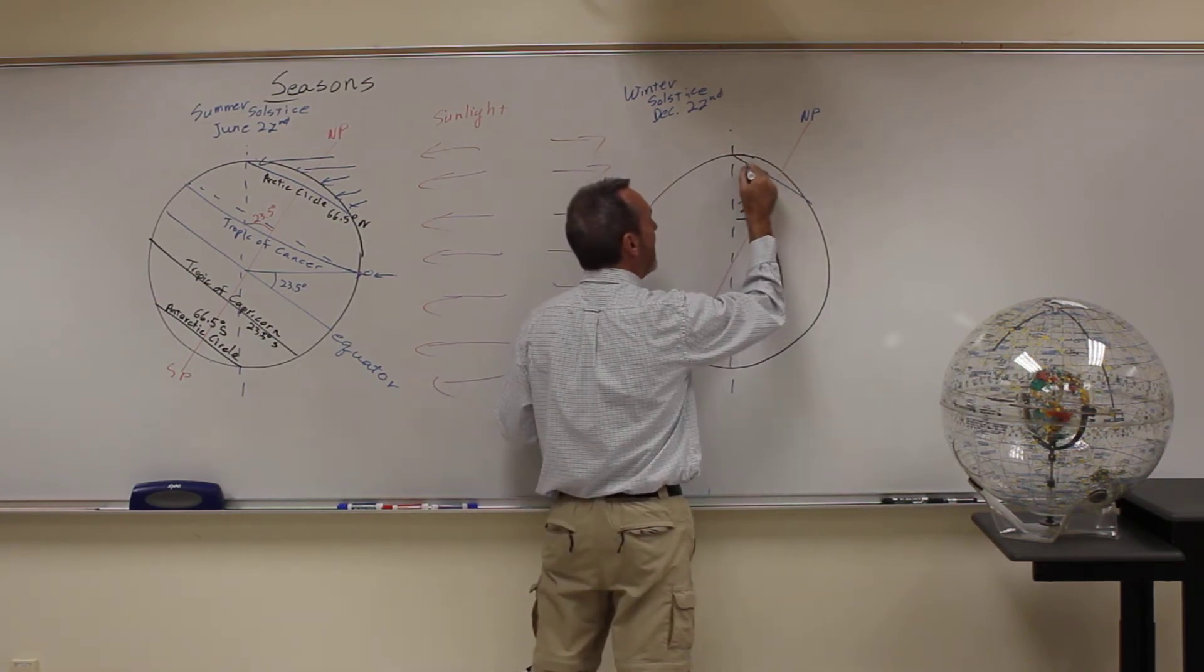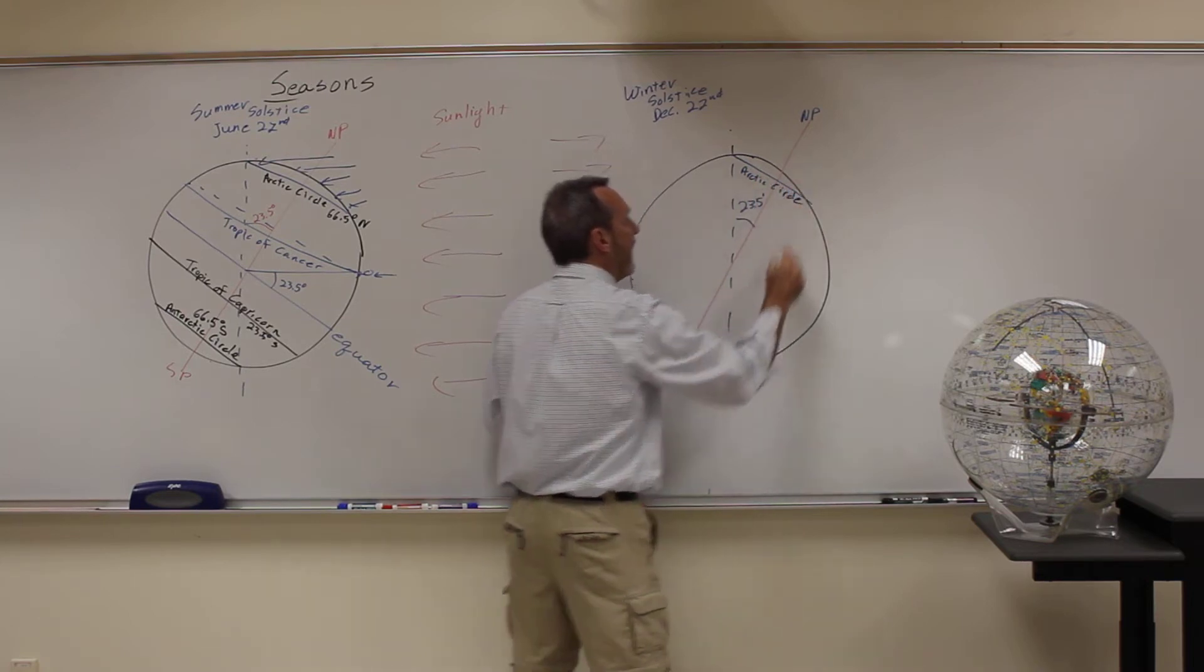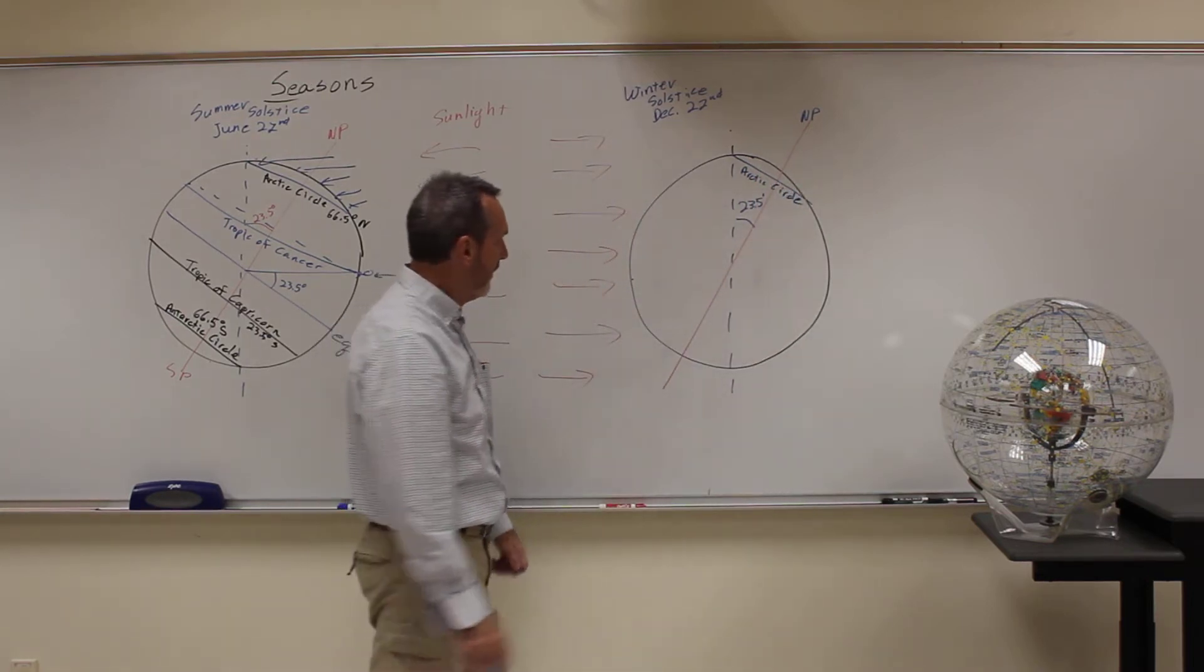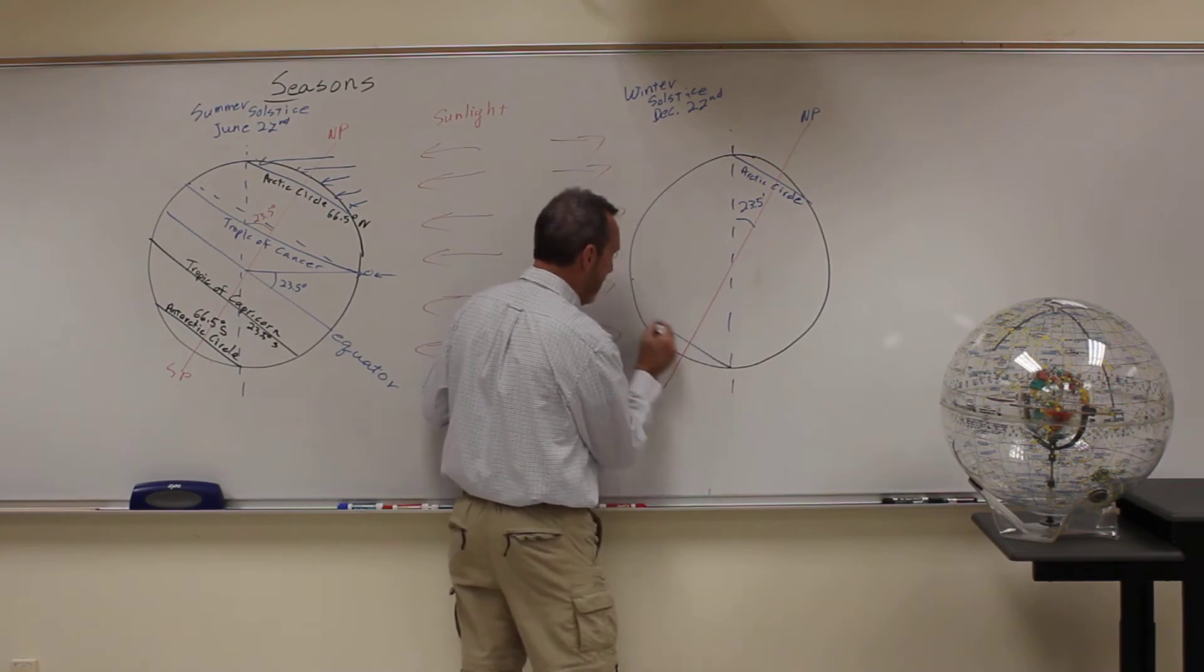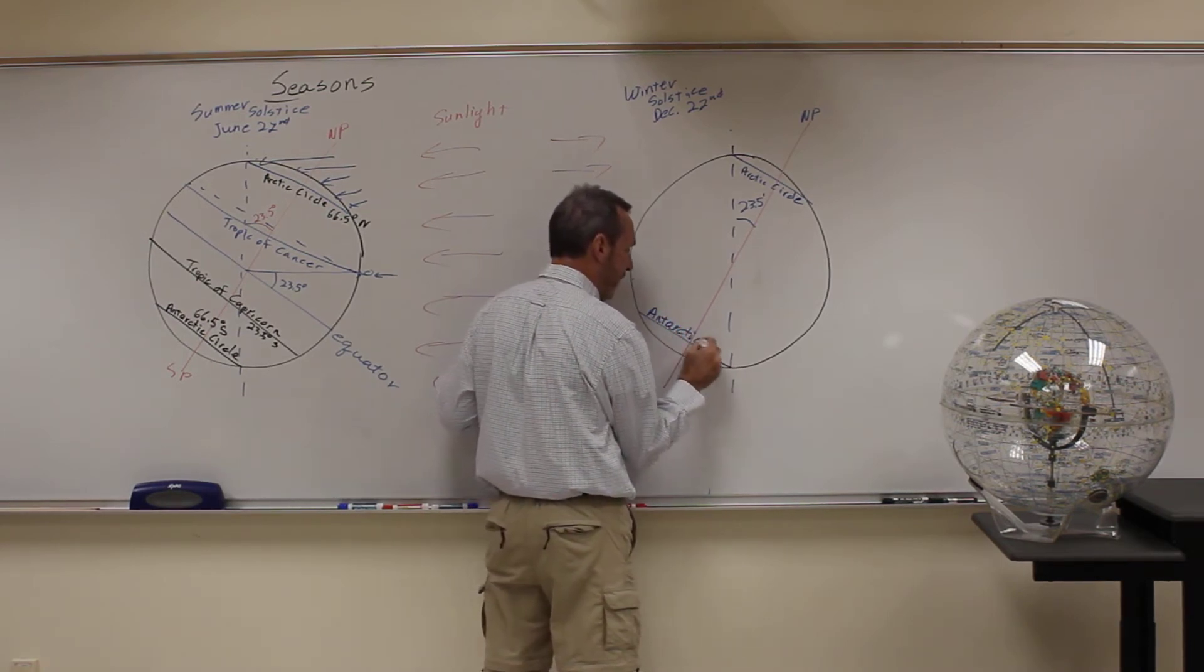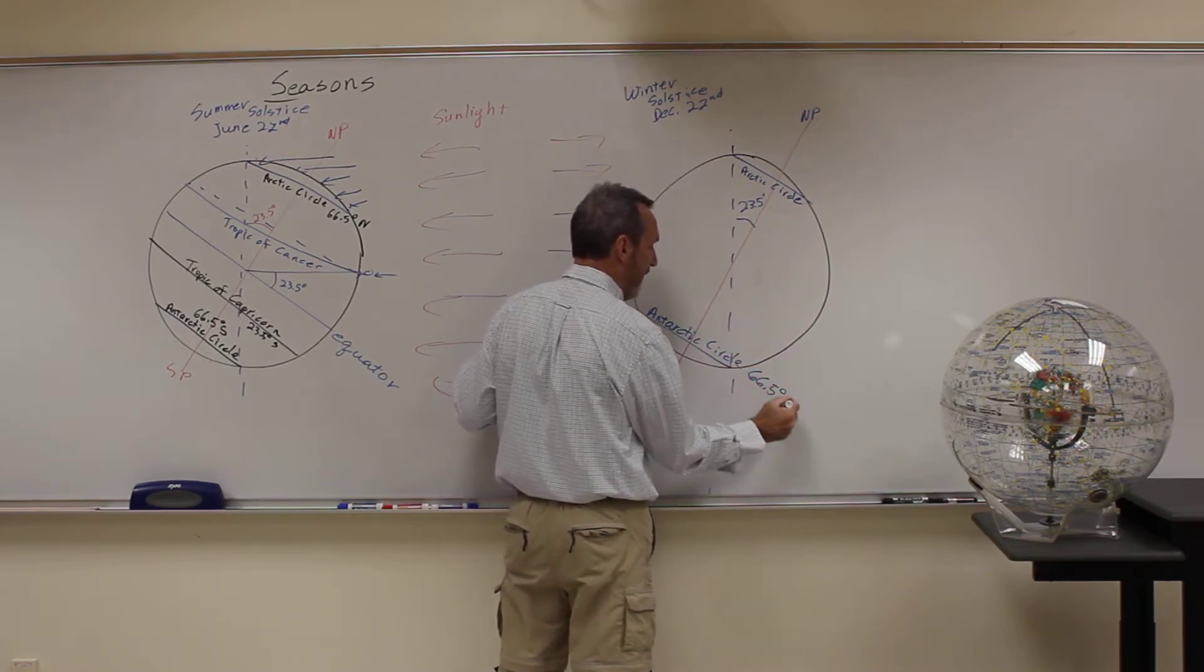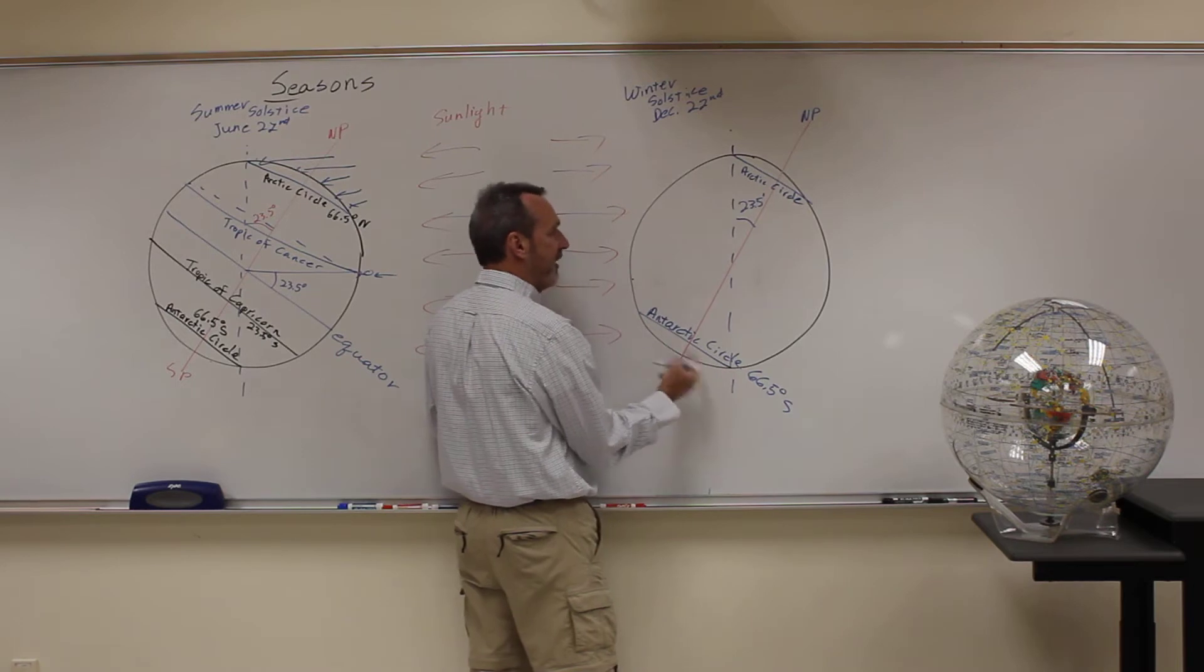So everything up here, above the Arctic Circle, has 24 hours of darkness. Anything down here, below the Antarctic Circle, at 66 and a half degrees south, gets 24 hours of daylight.